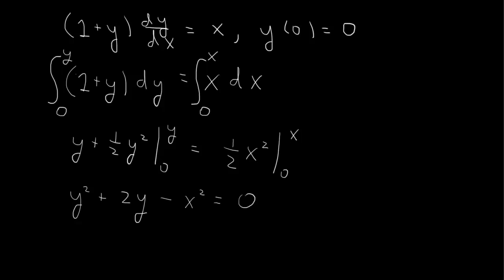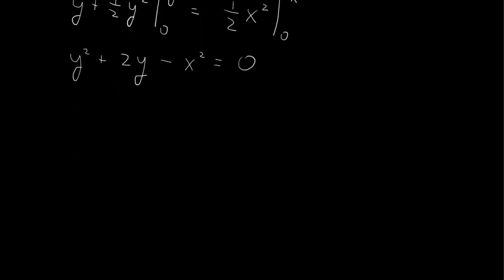What we have here now is a quadratic equation in y, which we can solve using the quadratic formula. We have two solutions: y = (-b ± √(b² - 4ac))/(2a). So we have -2 plus or minus the square root of 4